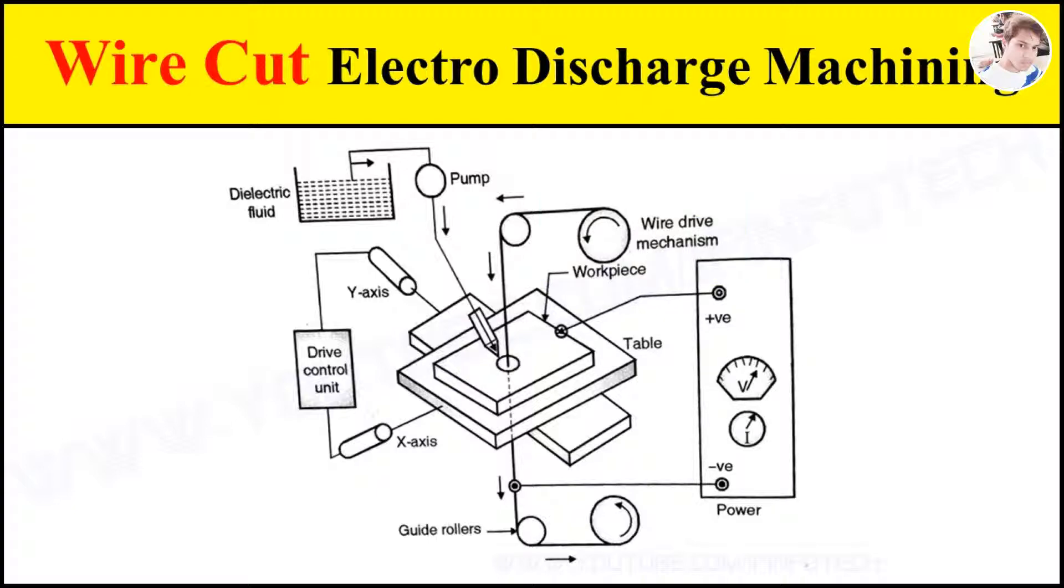Next is the wire drive mechanism. The wire is bounded on a wire spool and is fit with the help of guide rollers. The onward roller spool pulls the wire at suitable speed by using a wire drive unit so that each time fresh wire is available at the working zone.